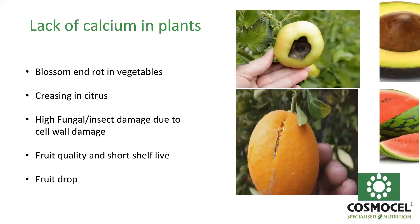Looking at what happens when we have low calcium in plants: in vegetables like tomatoes, peppers, chilies, and cucumbers we find blossom end rot. We also have creasing in citrus, high fungal or insect damage due to cell damage, fruit quality and shelf life problems, and fruit drop. These are very common in agriculture, and we can see calcium deficiencies in most crops — not necessarily for the whole season, but definitely during periods of very high demand.